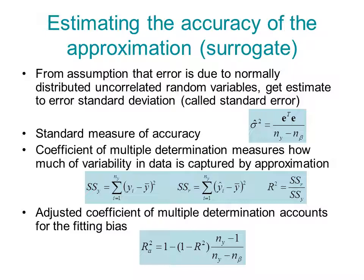And the formulas basically measure the sum of the square of deviation from the average measurement y hat. So SSY is the sum of the deviation of the surrogate and SSR is the sum of the deviation of the surrogate.